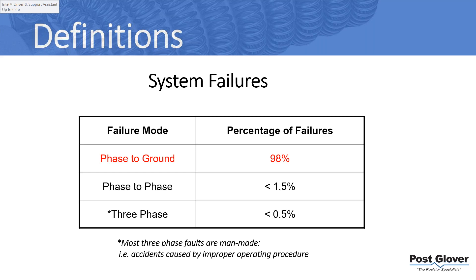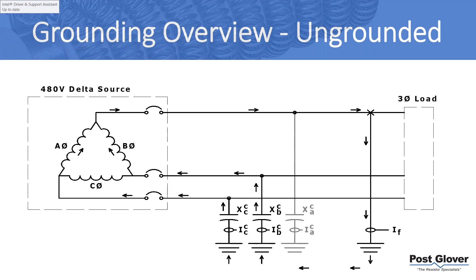Phase-to-phase faults are much less likely to occur on a resistance ground system from a single line-to-ground fault than on a solid ground system. Three-phase faults are a very small percentage — usually a man-made issue. I'm going to do a comparative analysis because resistance grounding is kind of in the middle, a hybrid of an ungrounded system and a solidly grounded system. It tries to take the best of both situations.